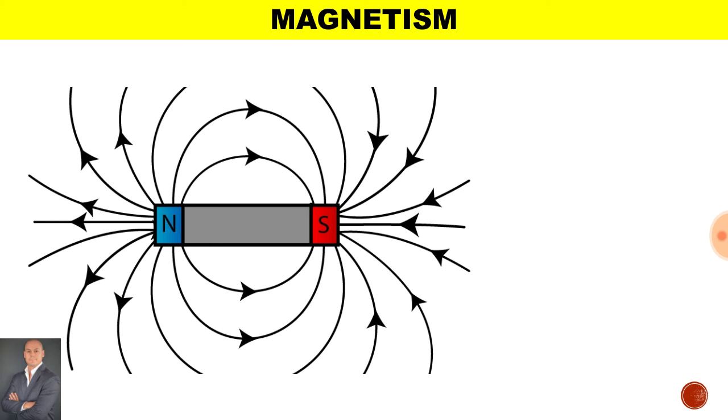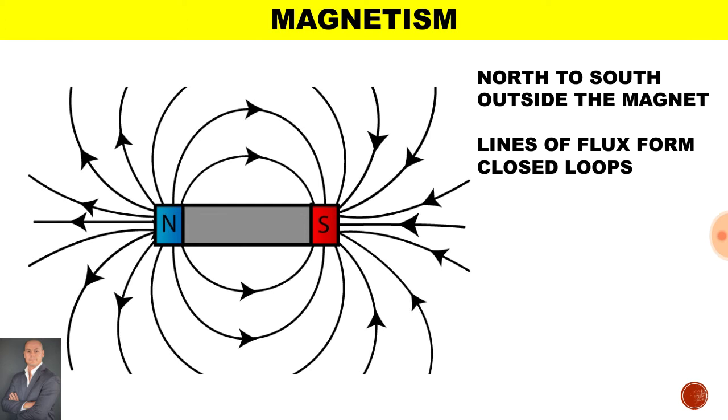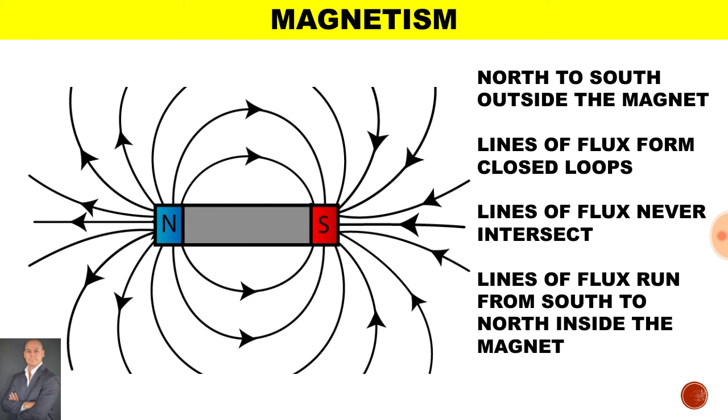Here we have a bar magnet. Now we find the lines of flux run from north to south outside the magnet, the lines of flux form closed loops, the lines of flux never intersect, and the lines of flux run from south to north inside the magnet.